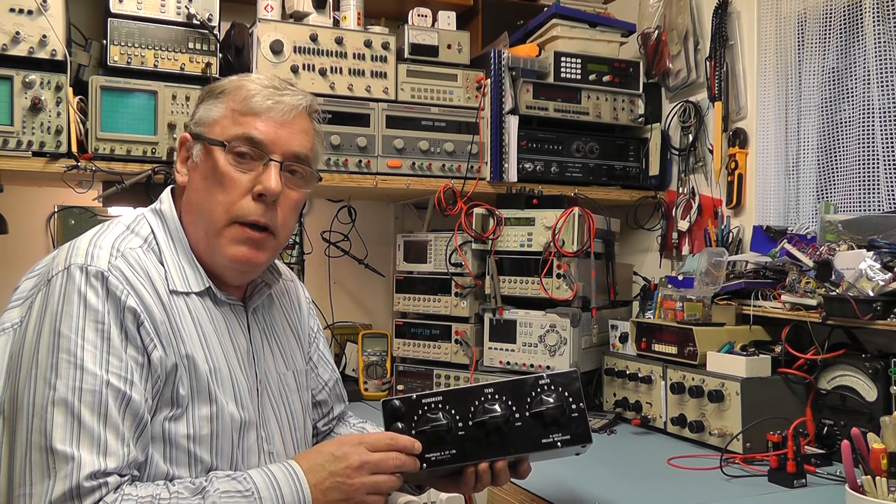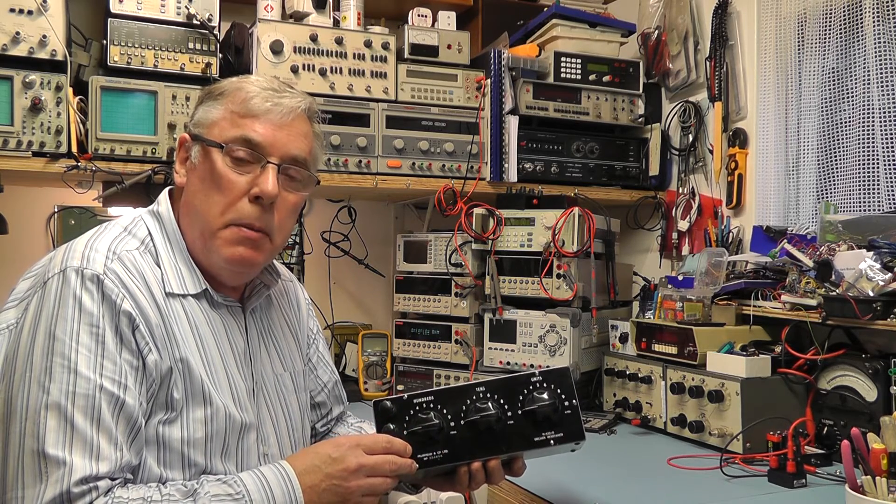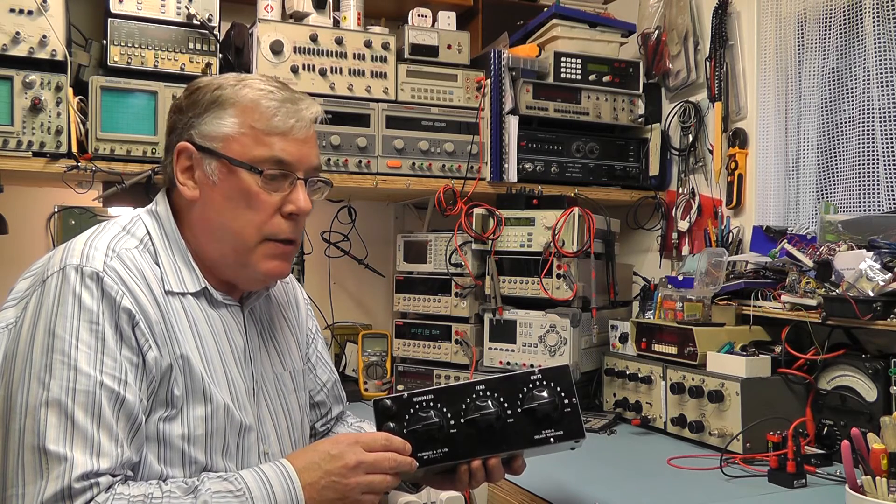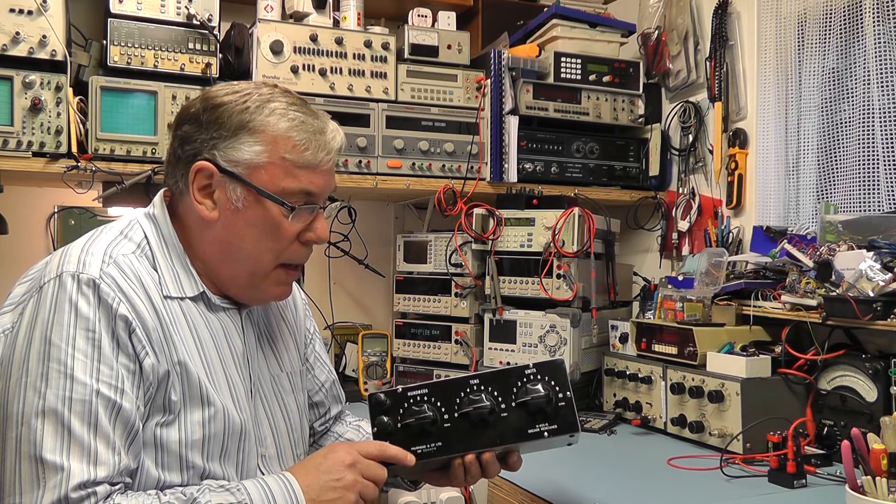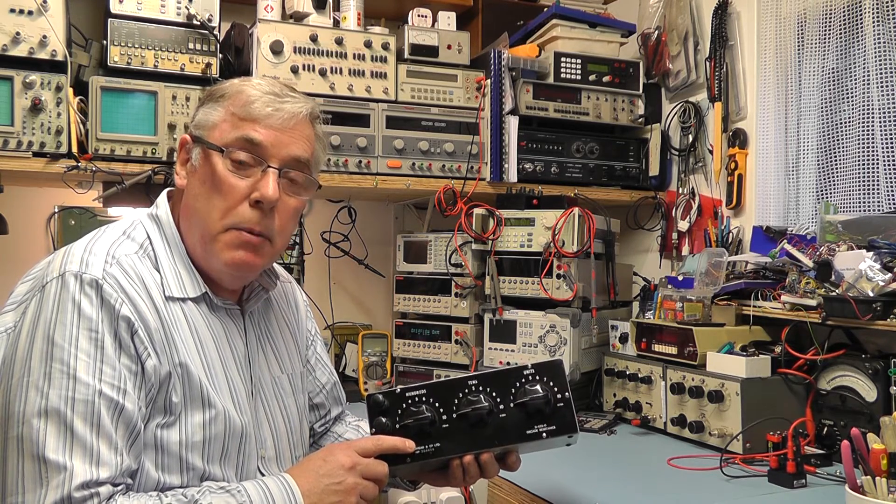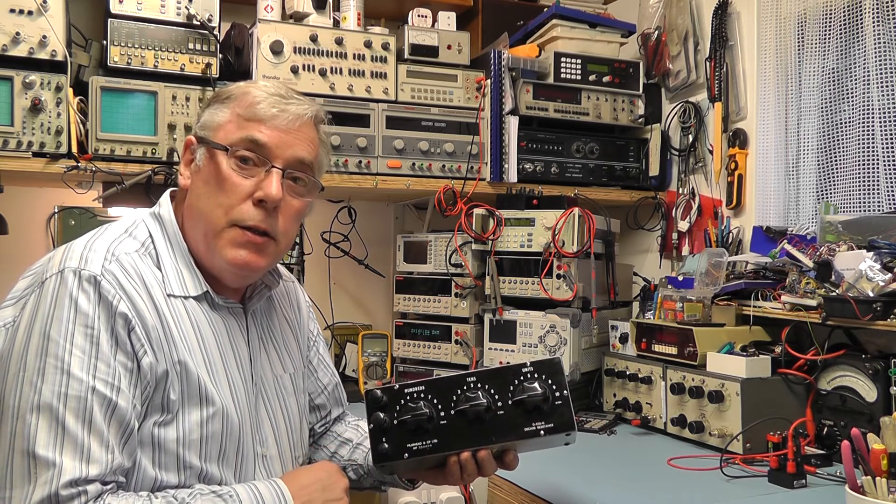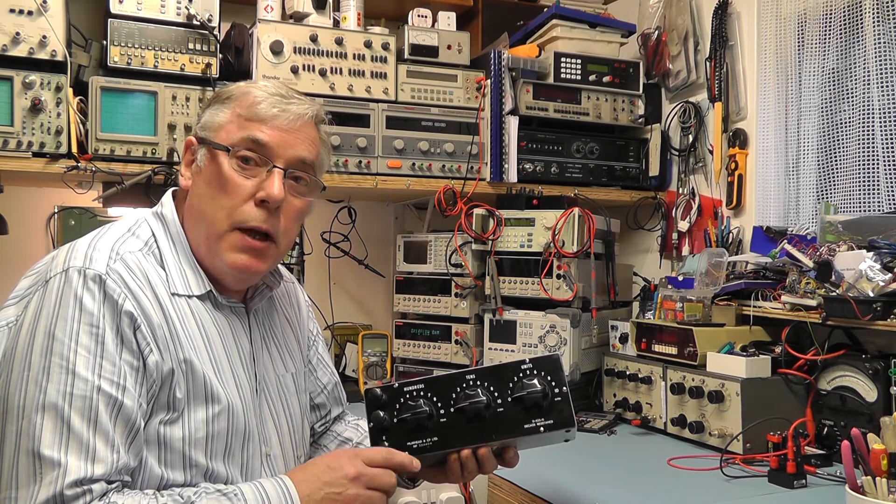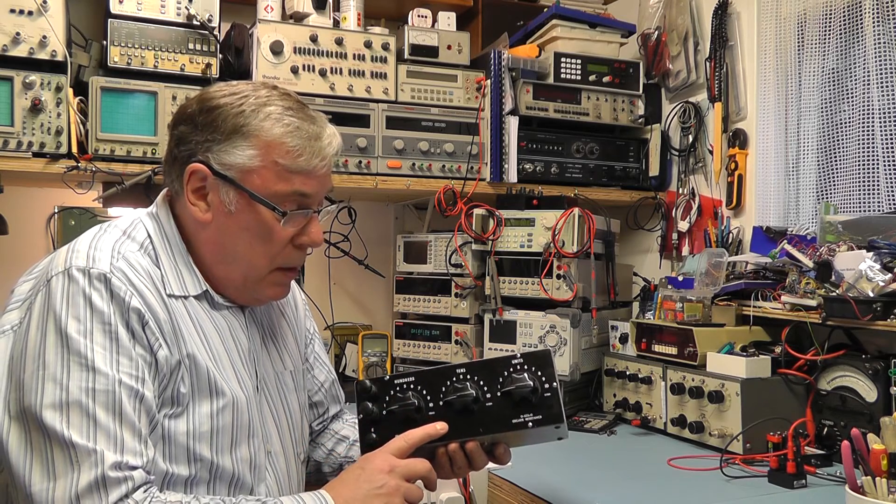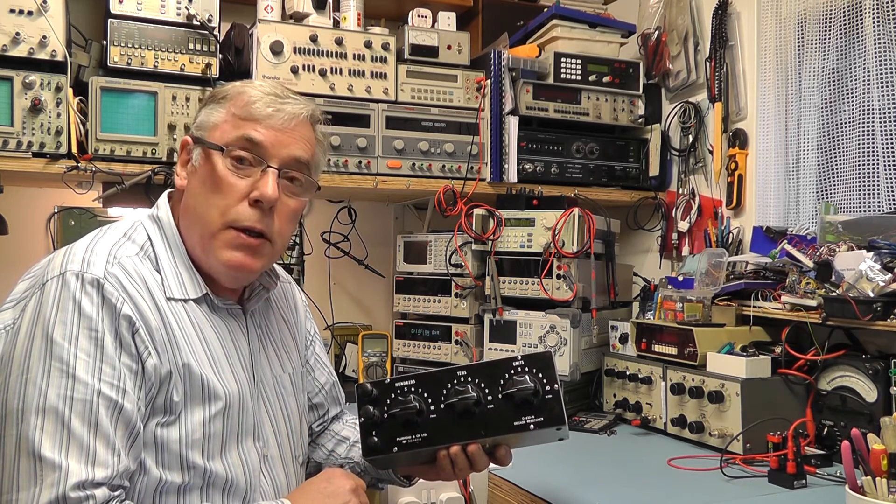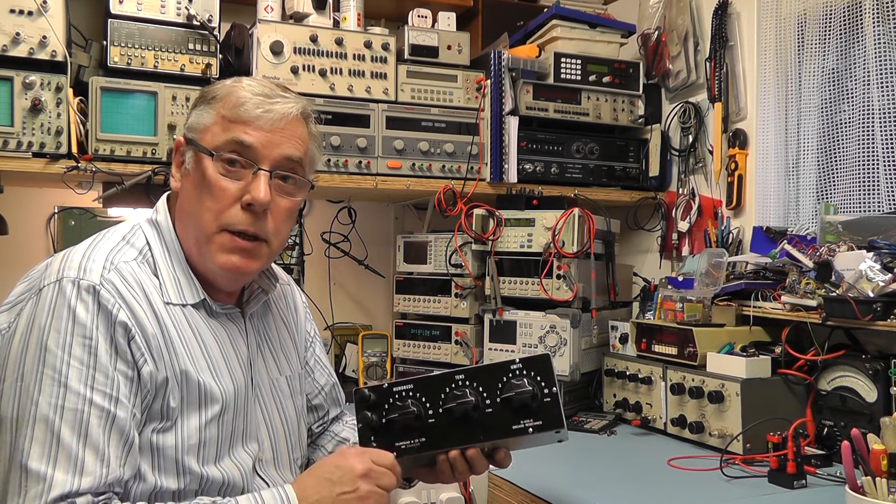The company Muirhead was founded way back in 1904 and specialized in telecommunications equipment. In fact most of the precision test equipment that they manufactured were related to the telecommunications side of their business. In the beginning of the 1960s they started producing some precision test instruments including things like this decade resistance box. They also produced decade capacitive boxes as well and a number of other pieces of test equipment.